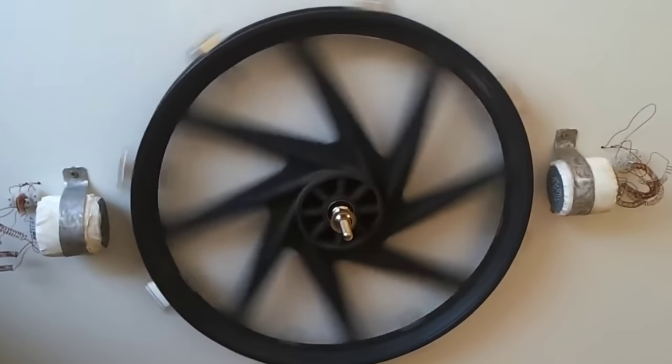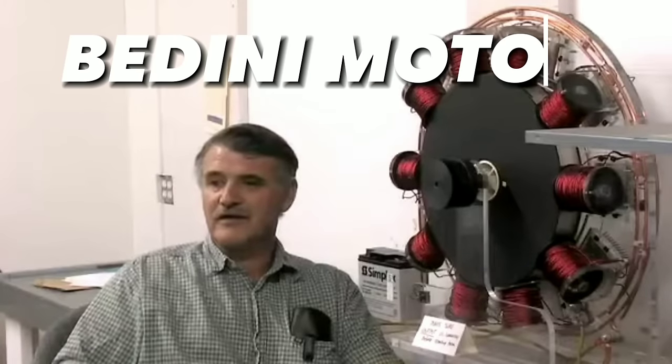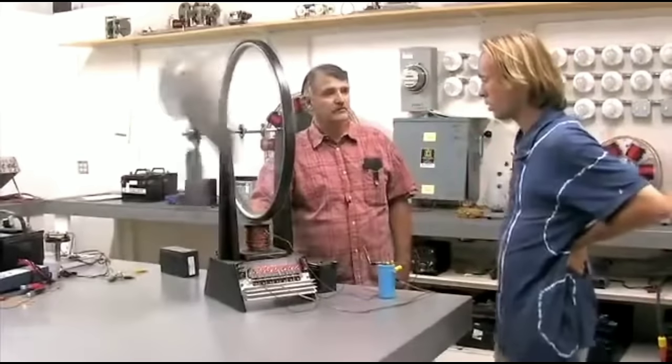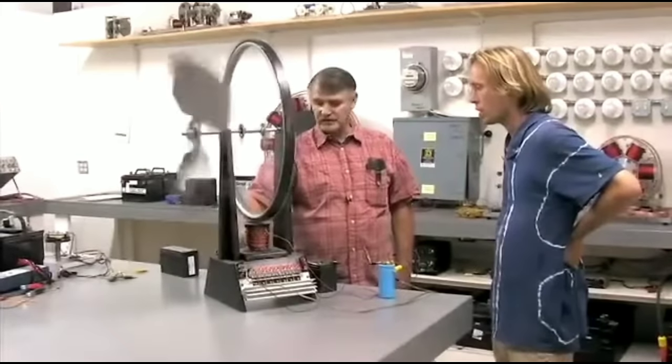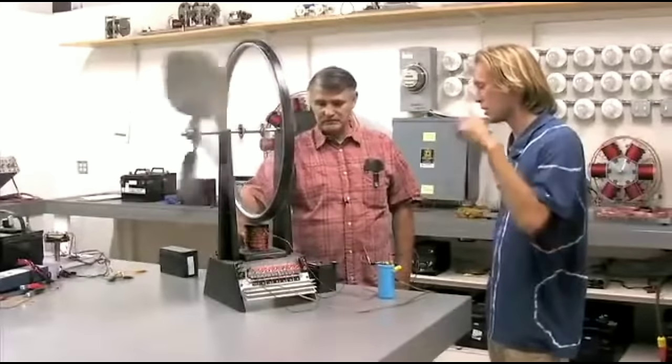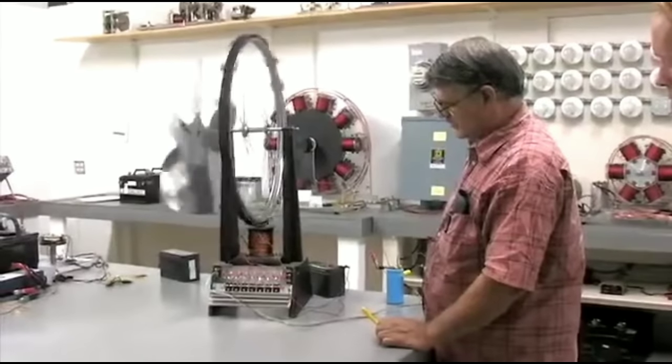One of the simplest and most popular magnet motors is the Bedini motor. This motor was invented by John Bedini, an American inventor and engineer, who claimed that his motor could run indefinitely on a single battery and also charge another battery at the same time. The Bedini motor consists of a coil of wire, a magnet, a transistor, a diode, and two batteries.